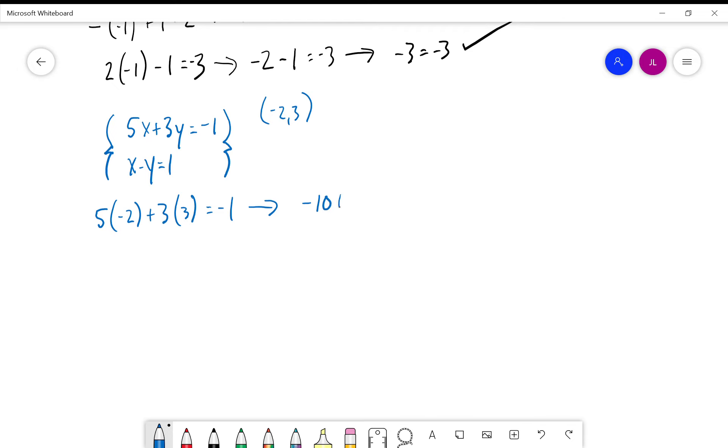Now we have to look at the second equation. Negative 2 minus 3 equals 1. Well, negative 2 minus 3 is negative 5 equals 1. That does not check, no good.